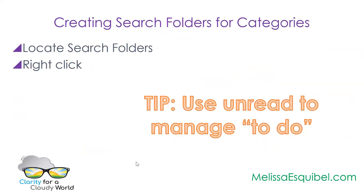Another way to keep things visible and work on batches is to create search folders for categories. If you can sort by category, why also use a search folder? You may want to continue managing your mail chronologically but still be able to jump to all your meetings. You can also use the unread flag so you can always see the number of items in that search folder that you still have to complete.